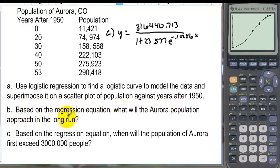Based on the regression equation what will the Aurora population approach in the long run so in other words what is this leveling out to and it's leveling out to the 316,440 so 316,440.